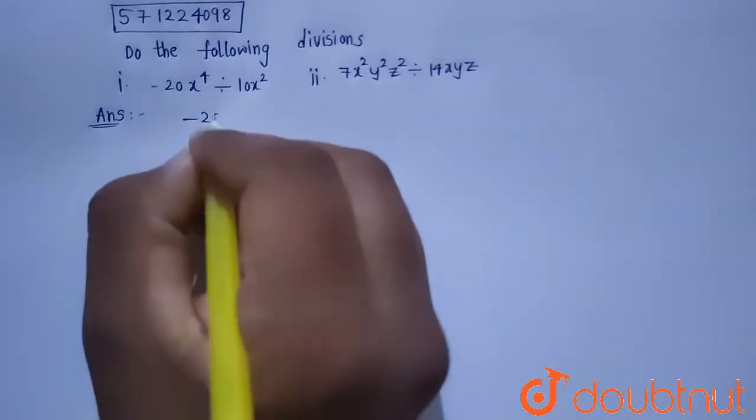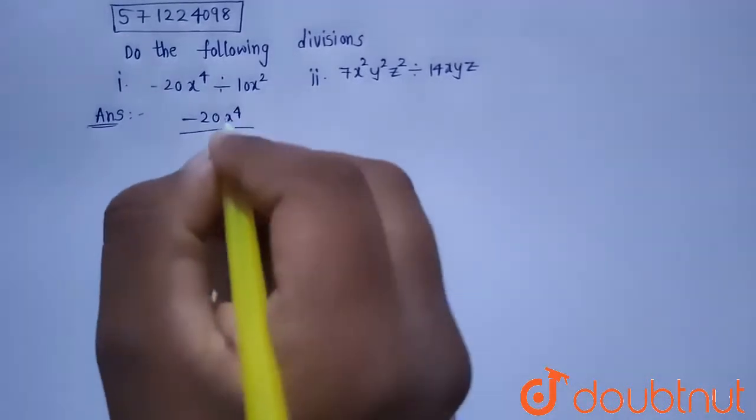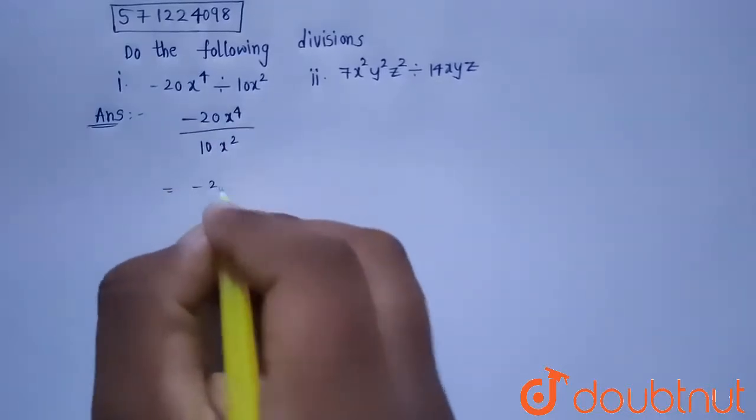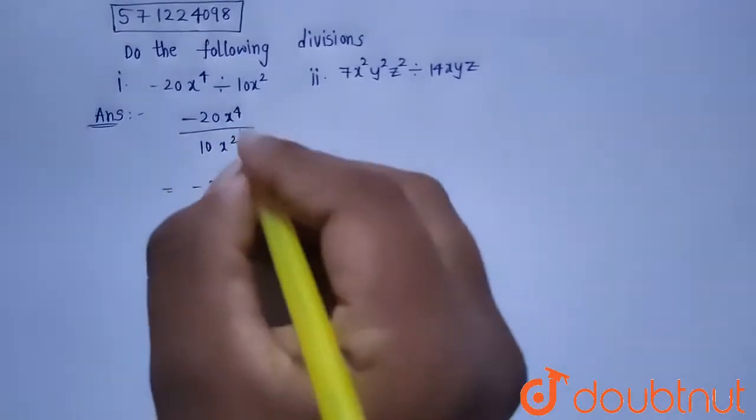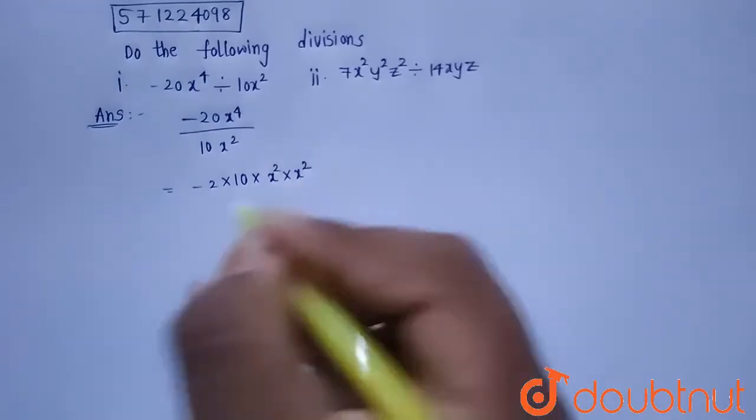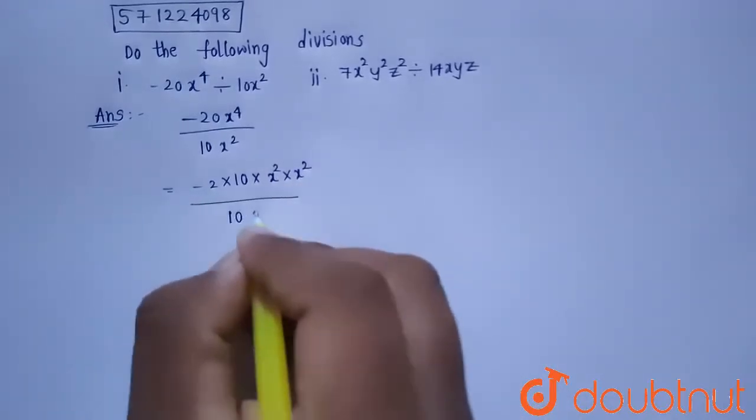So given the division is minus 20 x power 4 divided by 10 x square. Now I can write this minus 20 as minus 2 into 10, and this x power 4 can be written as x square into x square, divided by 10 x square.